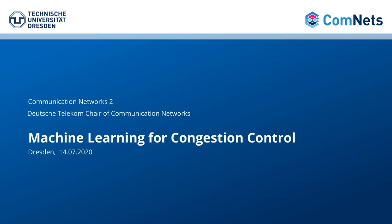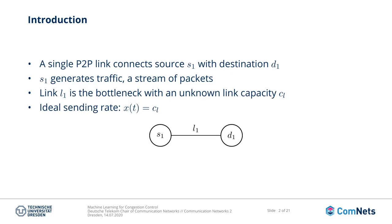Let's have a look at a very simple topology first. This is the classical point-to-point topology, where a single source node is connected with a destination through a link. The source node runs some applications that generate traffic. The packets flow strictly from left to right and the link has a finite capacity, also called the bandwidth or the link speed, in bits per second, that is unknown to the source node.